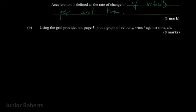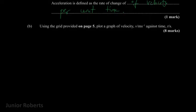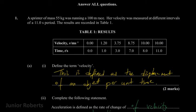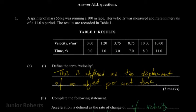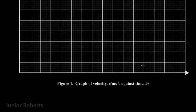Part b says: using the grid paper provided on page five, plot a graph of velocity against time. The first thing I'll be doing is setting a scale. We're plotting velocity against time, so we'll have velocity on the y-axis and time on the x-axis. Our y-axis needs to go from 0 to 10 and our x-axis needs to go from 0 to 11.